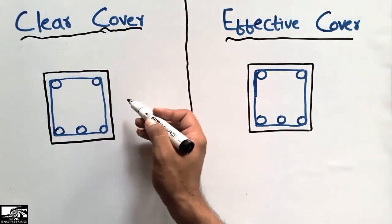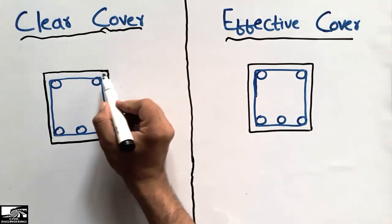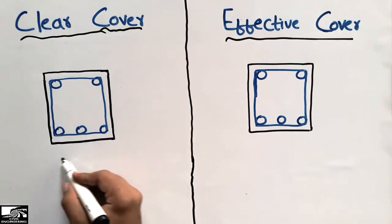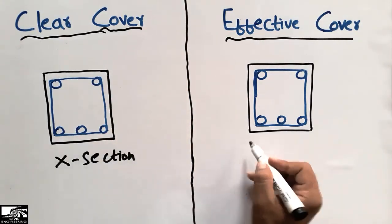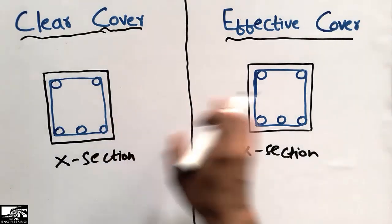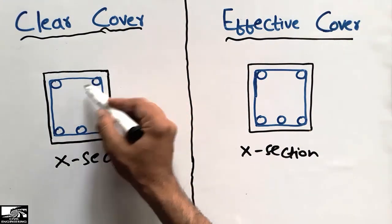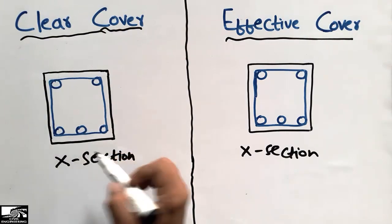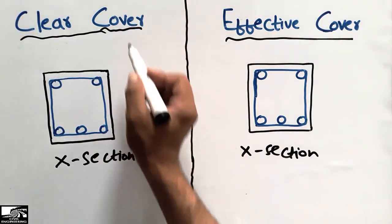Let's first discuss the clear cover. The clear cover is the distance from the extreme fiber of the beam. For example, if I consider this beam cross-section — I've taken an example to explain these two topics — this beam has two steel bars at the top and three steel bars at the bottom.